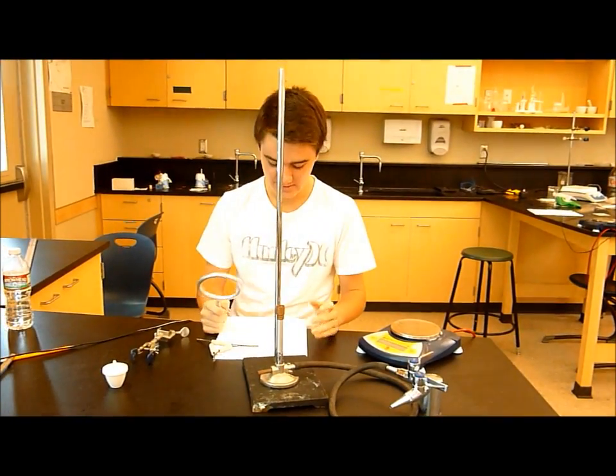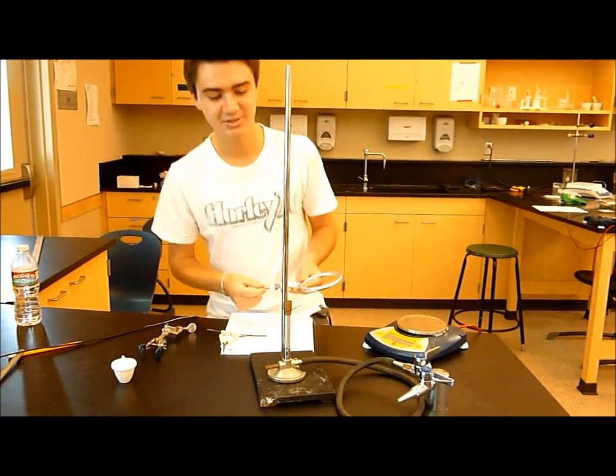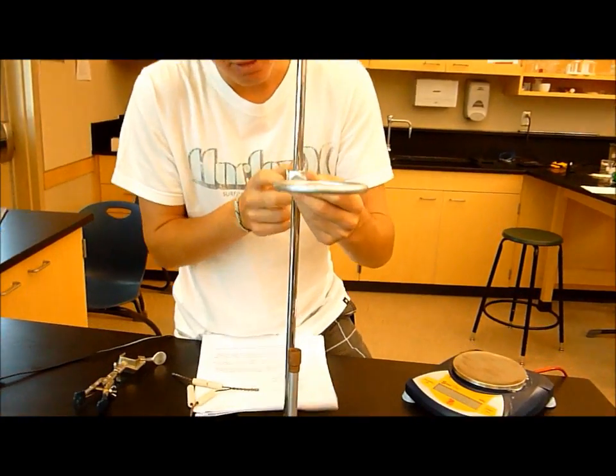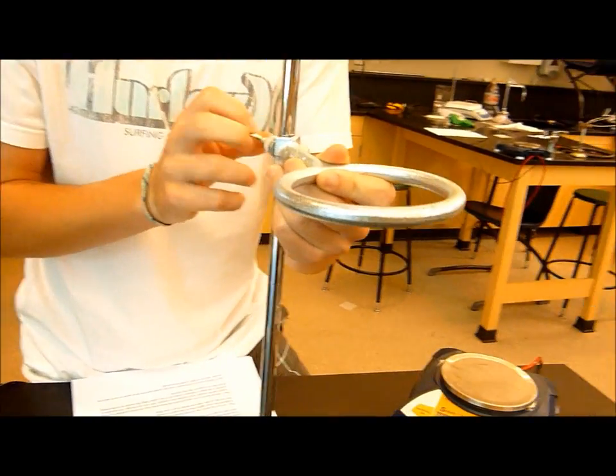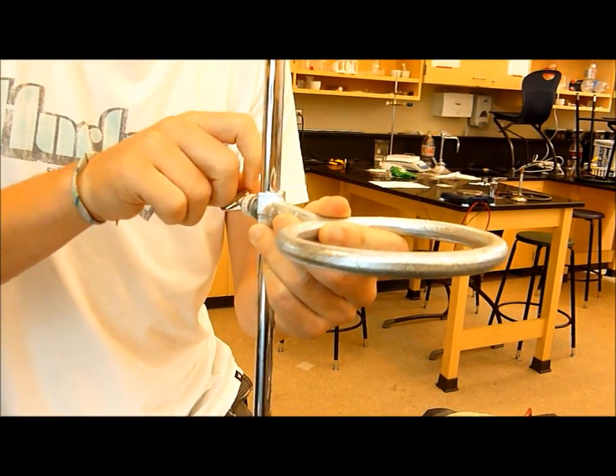Okay, now we need to set up the ring stand and the clay triangle for the crucible. So, what you need to do, you need to get your ring stand, and you need to unscrew it all the way so that it slides onto the pole,